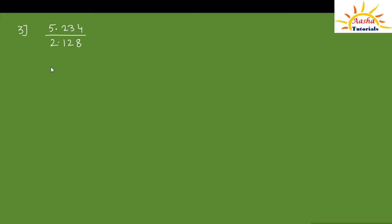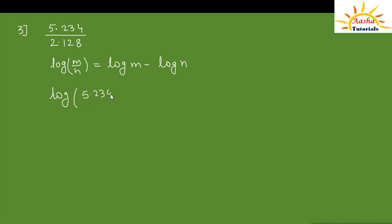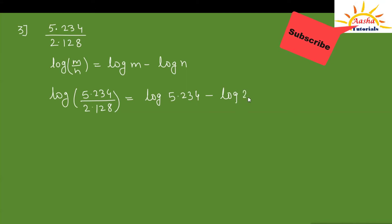Now let's take a division problem: 5.234 divided by 2.128, solved using the log table. Since there is division, we use the quotient rule. The log of m divided by n equals log of m minus log of n. So log of (5.234 ÷ 2.128) equals log of 5.234 minus log of 2.128.